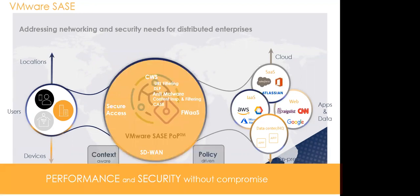The functionality in the VMware SASE PoP includes: first, Secure Access — tunneling of application traffic from the end user to the SASE PoP. Second, Cloud Web Security (CWS), which includes URL filtering, DLP, anti-malware, content inspection, content filtering, and CASB. Third, Firewall as a Service, providing layer 3, layer 4, and layer 5 firewall capabilities. And fourth, SD-WAN, which provides WAN optimization and seamless connectivity for end users.